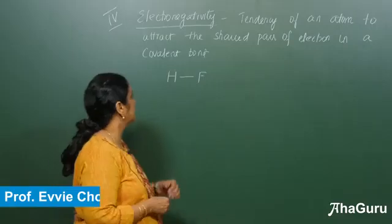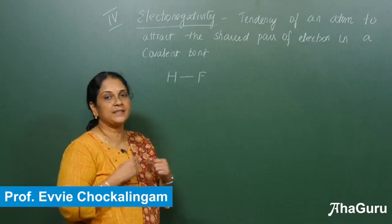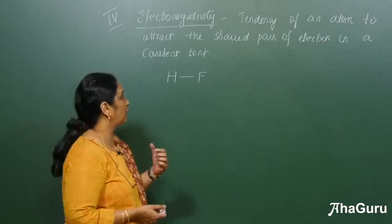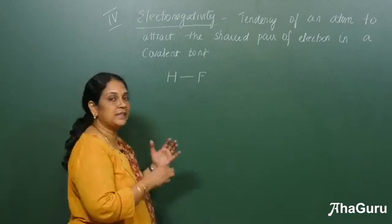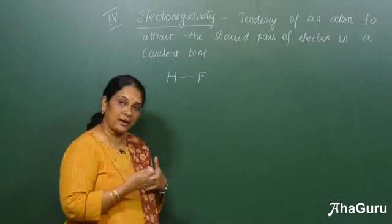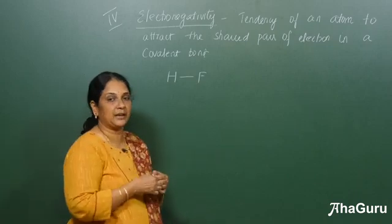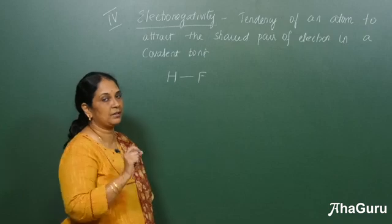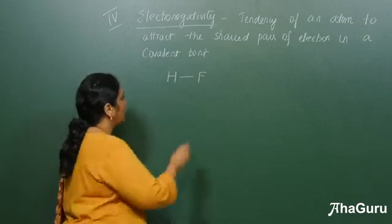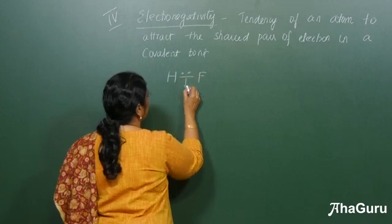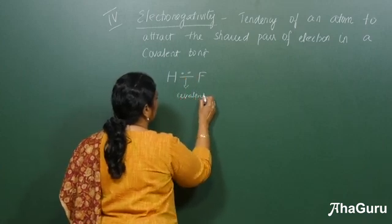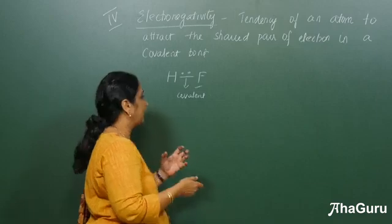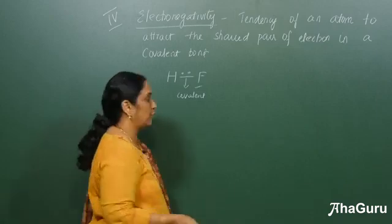The last periodic property is electronegativity. It is a tendency of an atom to attract the shared pair of electrons in a covalent bond. This is completely different compared to electron affinity — there, the atom takes up an electron, but here it only attracts the shared pair of electrons in a covalent bond. It is not applied to a single gaseous atom. Fluorine, for example, is more electronegative because it can attract the shared pair of electrons.